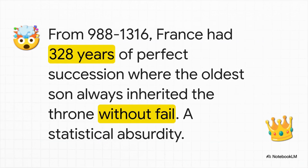The source points to another detail from France that seems a little too perfect: an unbroken chain of 328 years where the crown passed peacefully from father to eldest son every single time. In an age of plagues, assassinations, and brutal wars over succession, this kind of perfect uninterrupted inheritance starts to feel less like history and more like an idealized fairy tale.